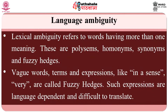Lexical ambiguity refers to words having more than one meaning. There are polysems, homonyms, synonyms, and fuzzy hedges. Polysems are words that have several similar meanings and are difficult to translate since an appropriate word in the target language has to be found. Homonyms are several independent words that share the same linguistic form and are difficult to translate since their meaning often depends on context. There are often several words with almost the same meaning, making it very difficult to choose the right one. Vague words, terms, and expressions like 'innocence', 'very', etc., are called fuzzy hedges. Such expressions are language dependent and are difficult to translate.